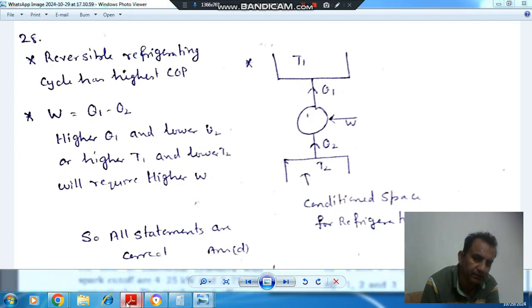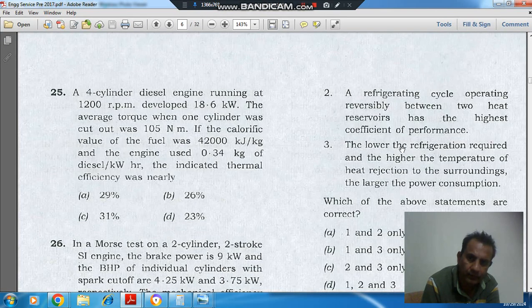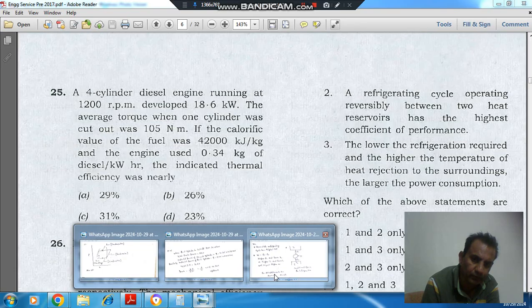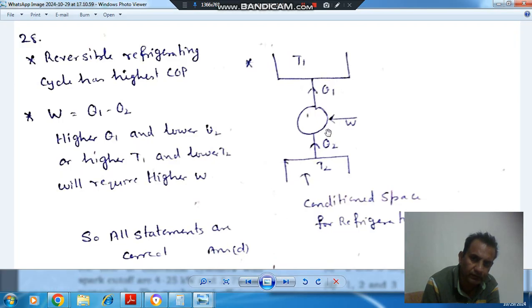And the third statement: the lower the refrigeration required and the higher the temperature of heat rejection to the surroundings, the larger the power consumption. So if this difference Q1 minus Q2 is increasing, then the work also increases.